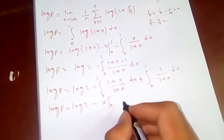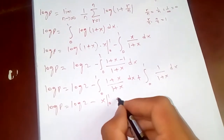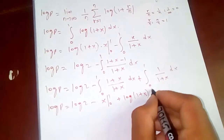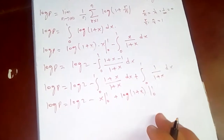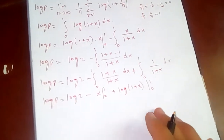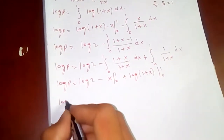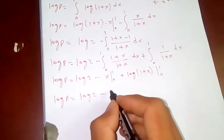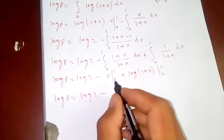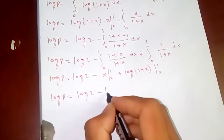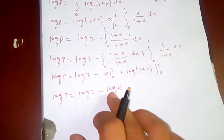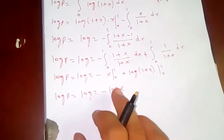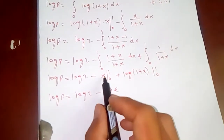So log P equals log two minus x evaluated from zero to one, plus log of one plus x evaluated from zero to one. This gives log two minus one plus log two, and since one can be written as log e in natural logarithm, we have log P equals log two minus log e.